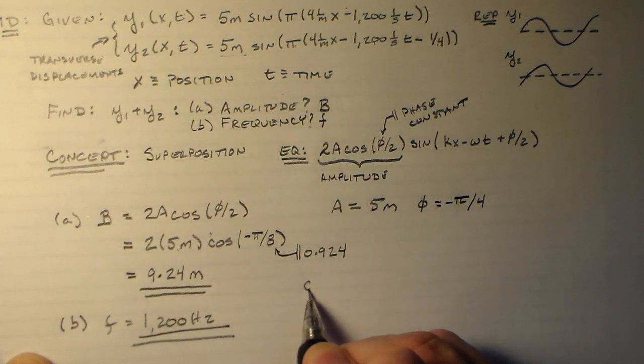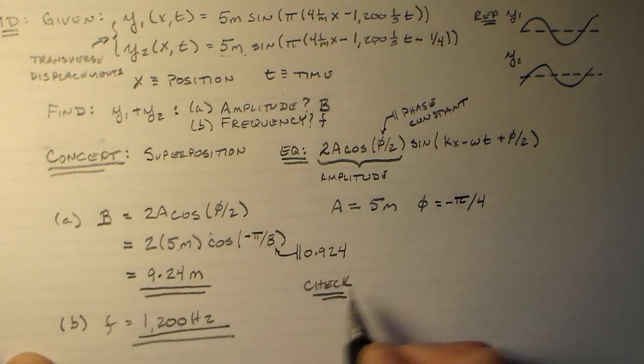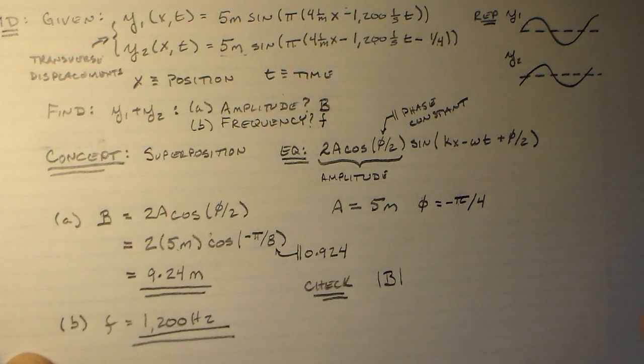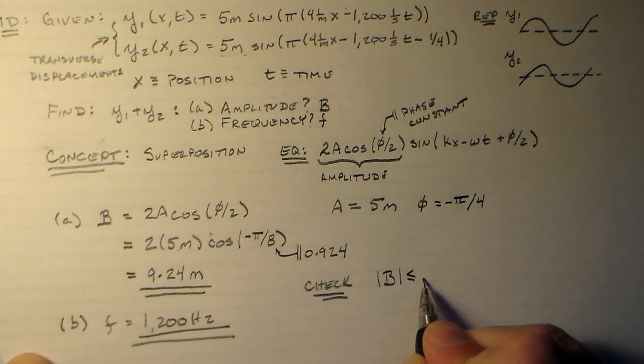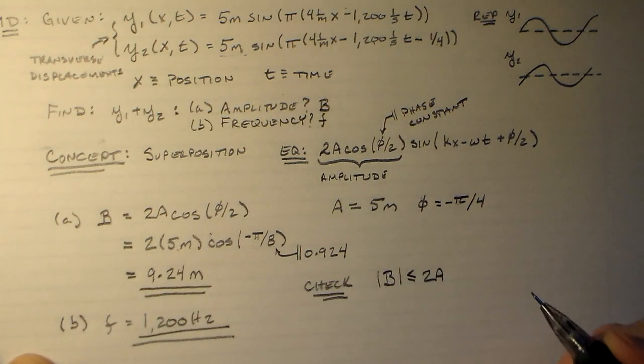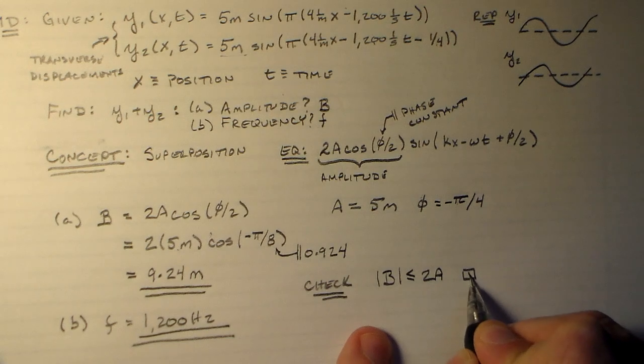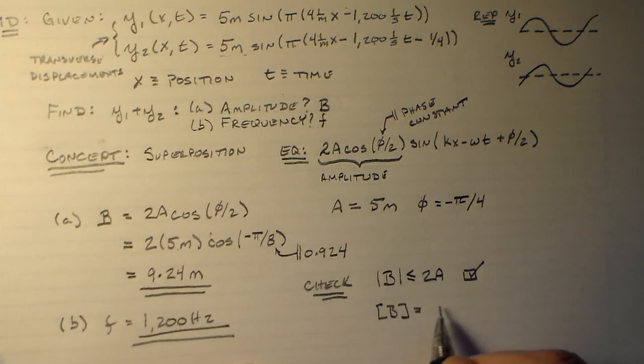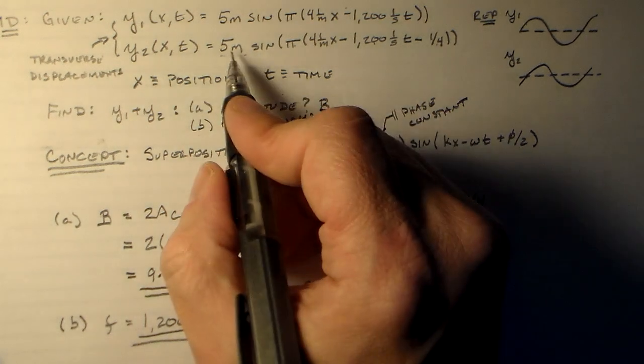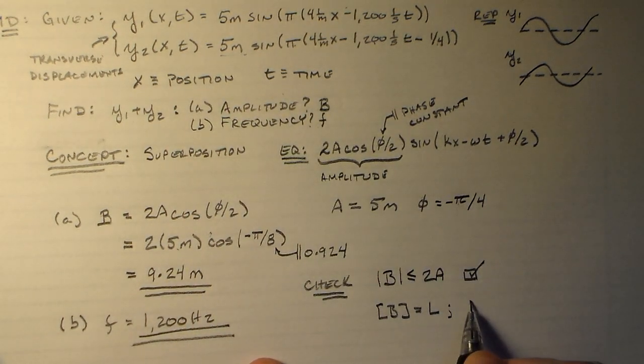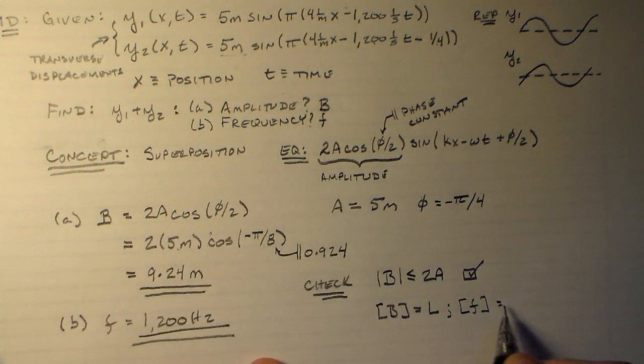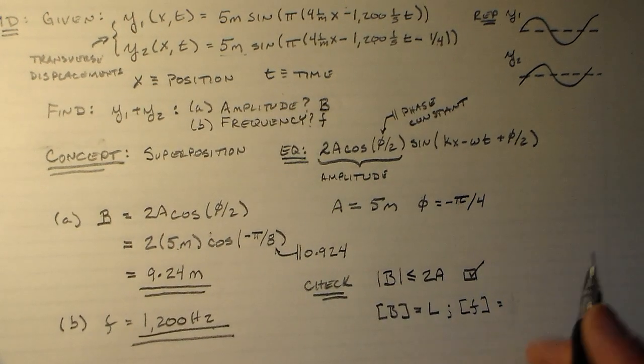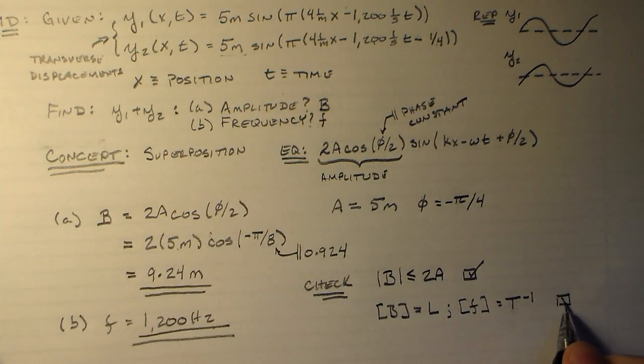So that's all right. Check: well, B is now a positive number so I don't really need absolute values but B is less than or equal to 2A, so that's good. We could use that as a check. The units of B are equal to length, which is the correct unit for the amplitude in this case. The units of F are equal to one over seconds, hertz, or T to the minus one. So that's okay.